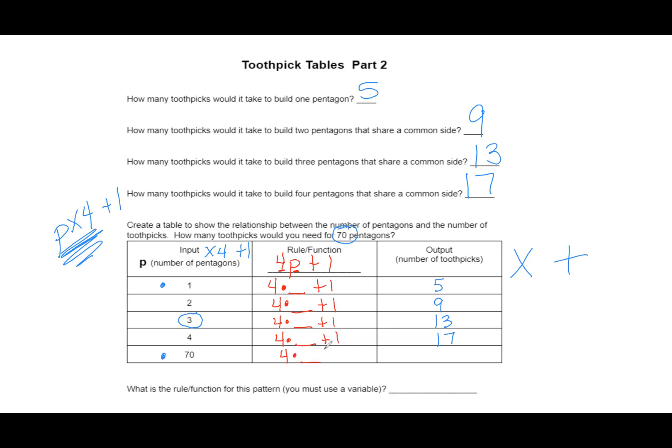And then I'll just go fill it in for the letter P. So the first one was 1 pentagon, then we had 2 pentagons we tried, 3, 4, and oh my goodness, 70. That would have been a lot of pentagons to have to make, thank goodness for functions and rules. So we don't have to sit and make 70 pentagons. So of course on this first one, we're just going to check our answer one more time. 4 times 1 would be 4, plus 1 would give me 5. On the second one, 4 times 2 would be 8, plus 1 would give me 9. 4 times 3 is 12, plus 1 would give me 13. 4 times 4 is 16, plus 1, yeah, would give me 17.